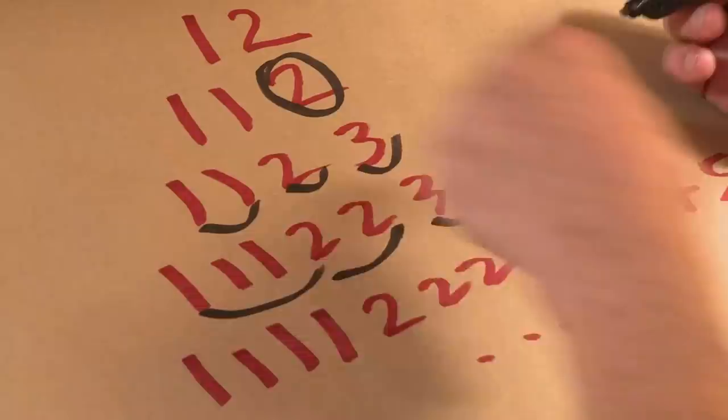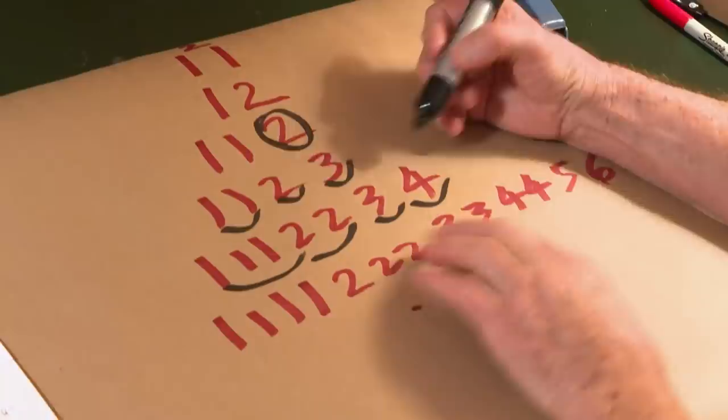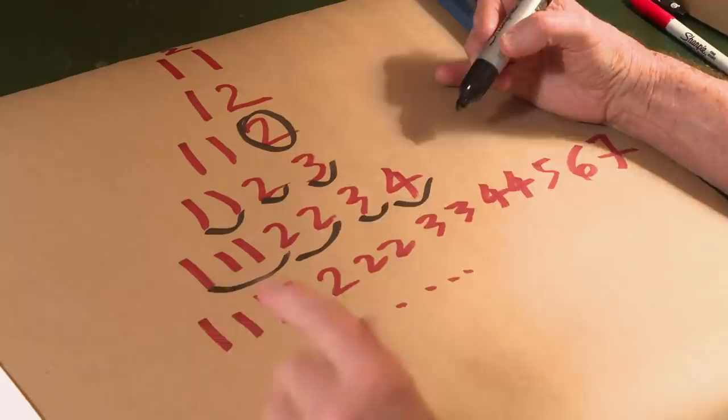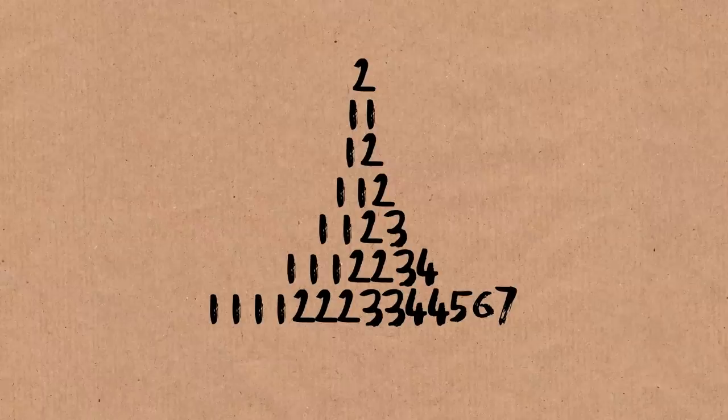And we keep going in that way. So here again we have four ones, three twos, two threes, two fours, one five, one six, and one seven. That's the next row. And you keep going. That's the triangle.